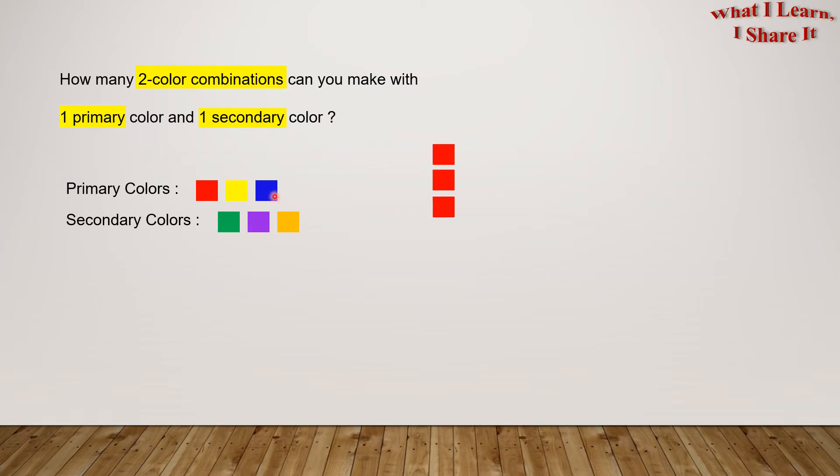So we'll pair each of these primary colors with each of the secondary colors. So red goes with green, purple, and orange. Then yellow goes with green, purple, and orange.